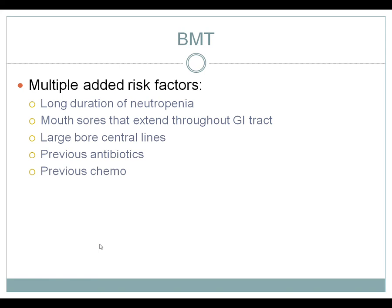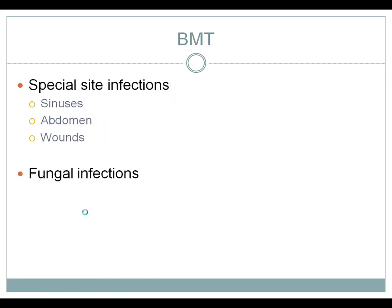The BMT patient has added risk factors: long-duration neutropenia, previous cycles of chemotherapy leading to colonization, frequent mouth sores that can extend throughout the GI tract causing exposure to intestinal infection, large-bore central lines with greater surface area for infection, and many prior antibiotics leading to resistant bacteria or fungus. BMT patients also have special site infections to consider — sinus infection, abdominal infections, and infected surgical wounds — particularly with prolonged neutropenia.